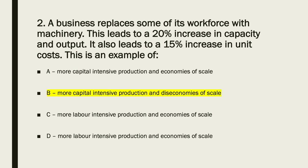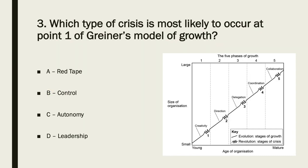Let's move on to question three: Greiner's model of growth. The answer is D — leadership. It is leadership, the first revolution after the creativity evolution. For more details on that, click the card up there.